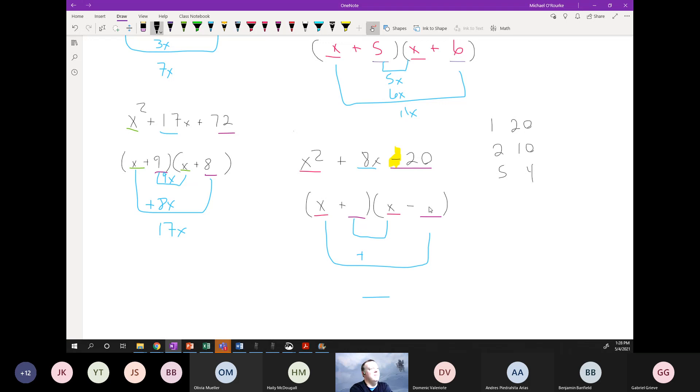Very good. 10 and negative two, right? Which one's going to be positive? The 10. Good, 10 and two. They multiply to make negative 20, and they add together, 10 and negative two, to make eight.